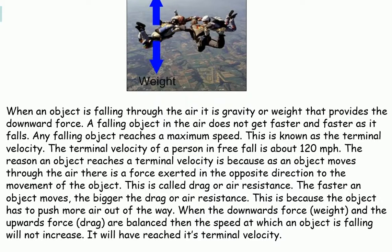When an object is falling through the air, it is gravity or weight that provides the downward force. A falling object in the air does not get faster and faster as it falls. Any falling object reaches a maximum speed. This is known as the terminal velocity. The terminal velocity of a person in free fall is about 120 miles an hour. As an object moves through the air, there is a force in the opposite direction to the movement of the object. This is called drag or air resistance.